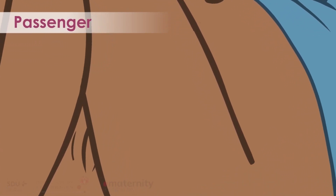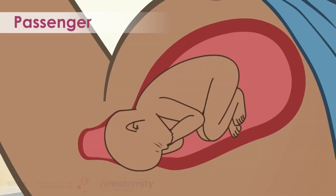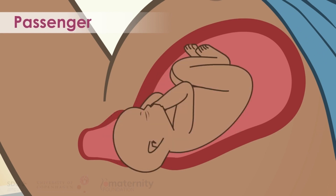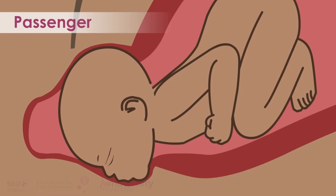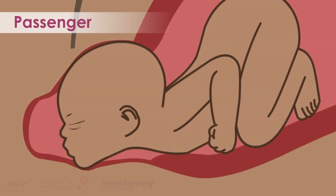Passenger: The normal presentation is cephalic and the normal rotation is occiput anterior. Sometimes there is a malposition, like occiput posterior. Sometimes the head can be bent to the side, or sometimes there is a malpresentation, for example brow or face.